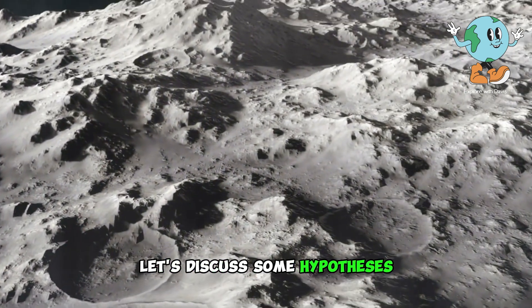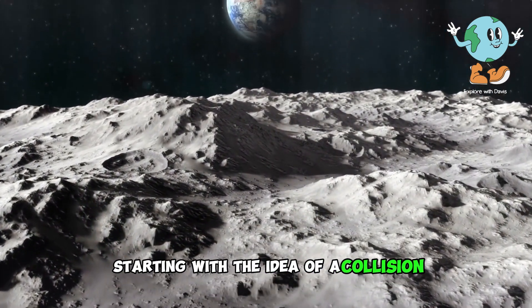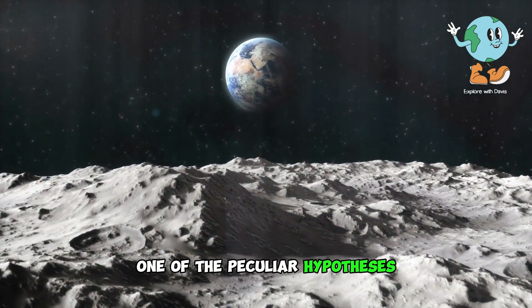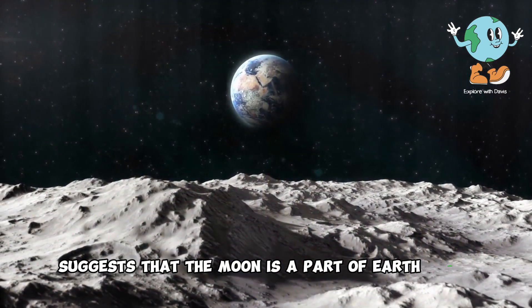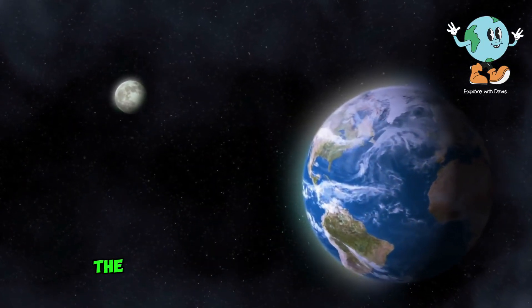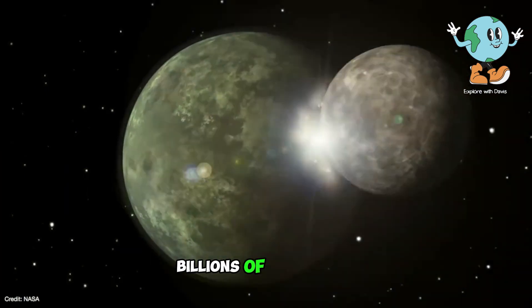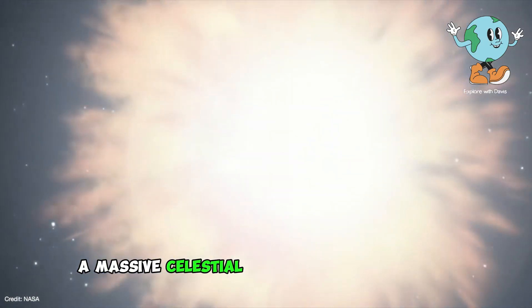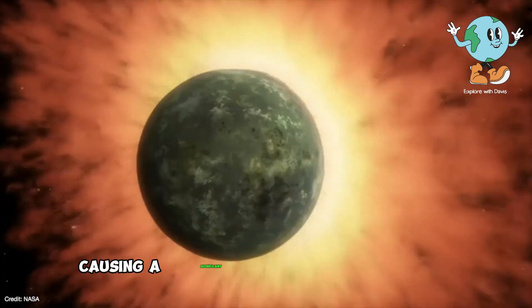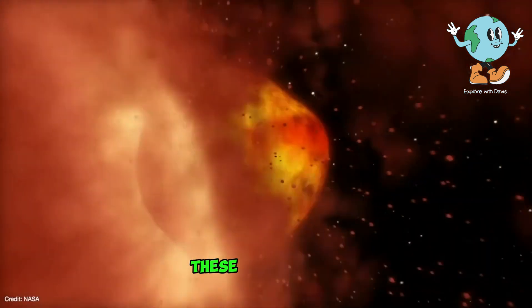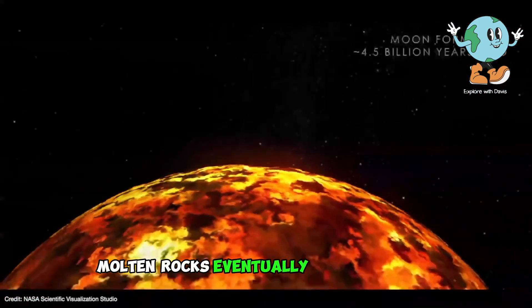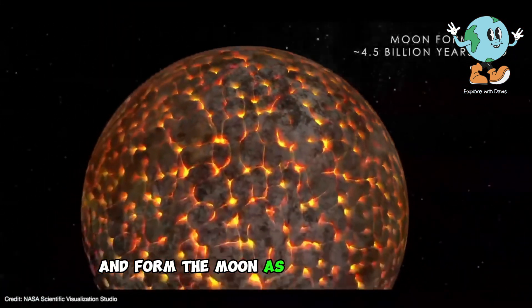Let's discuss some hypotheses, starting with the idea of a collision. One peculiar hypothesis suggests that the moon is part of Earth itself, or in other words, the moon was once part of our planet. According to this hypothesis, billions of years ago, a massive celestial body collided with Earth, causing a significant portion to break away. These fragmented molten rocks eventually came together and formed the moon as we know it today.